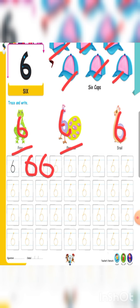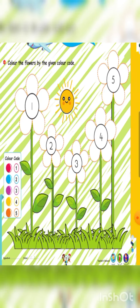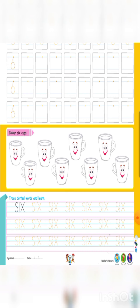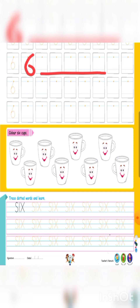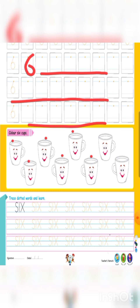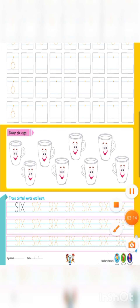And on page number 17, again dotted six — like this. Kuch lines mein only dot given hai, aapko dot pe six draw karna hai. Next, color six cups. Only six cups ko aapko count karna hai, then color karna hai: one, two, three, four, five, six. Okay. In match only this. Next, GK on page number 16.